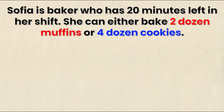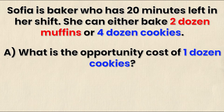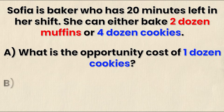The scenario is this: Sophia is a baker who has 20 minutes left in her shift. She can either bake two dozen muffins or four dozen cookies. Question A asks what is the opportunity cost of one dozen cookies, and question B asks what is the opportunity cost of one dozen muffins. You may get a similar question but with cars and trucks or basketballs and footballs — two different goods with a trade-off where you can only produce one or the other.